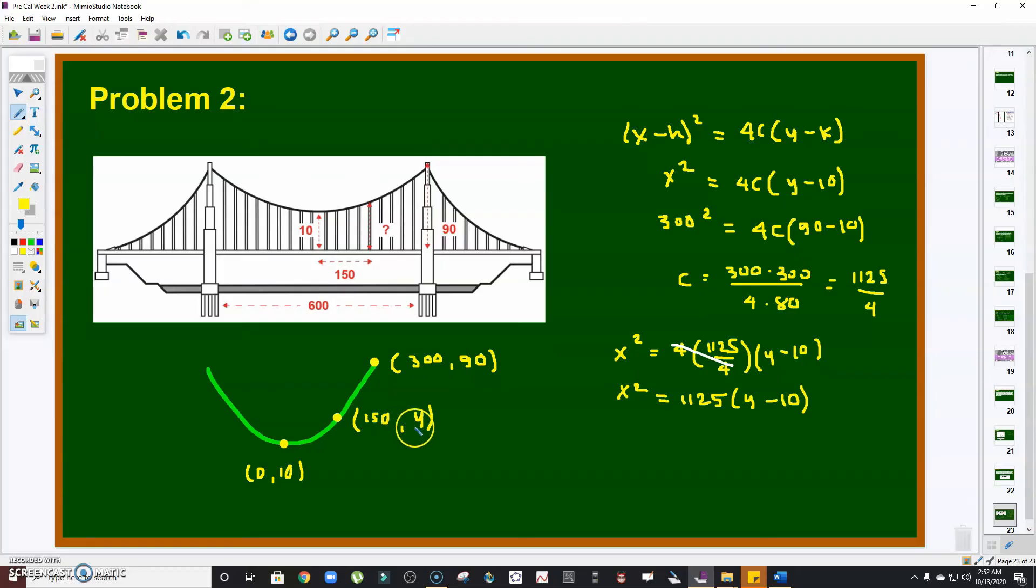But the question is: what is y when x is 150? So substitute 150: 150² = 1,125(y - 10). From there we can solve. So y = 150²/1,125 + 10. That's 150 × 150, which is 22,500 over 1,125, then plus 10. Take note, 1,125 × 2 is 2,250, so this is just 20 plus 10.